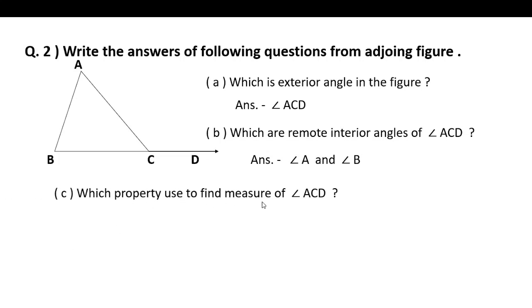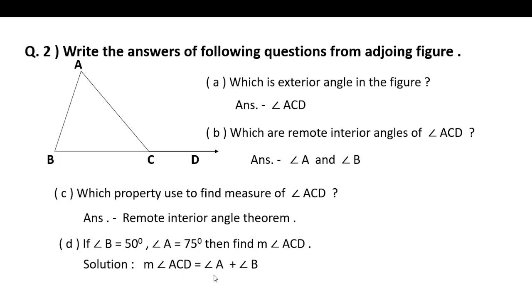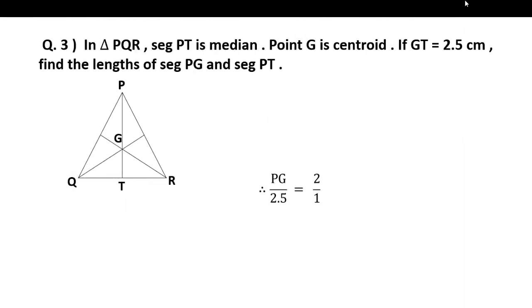Which property use to find measure of angle ACD? The remote interior angles theorem states that angle ACD equals angle A plus angle B.